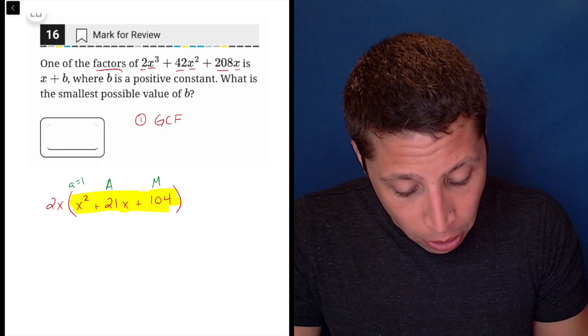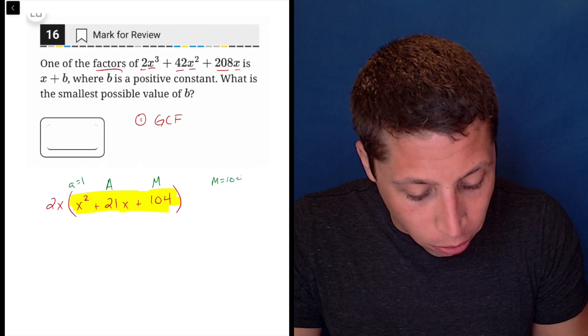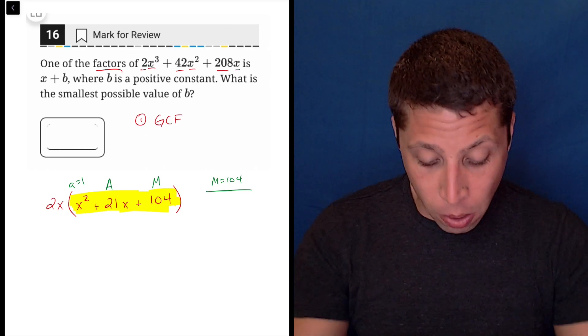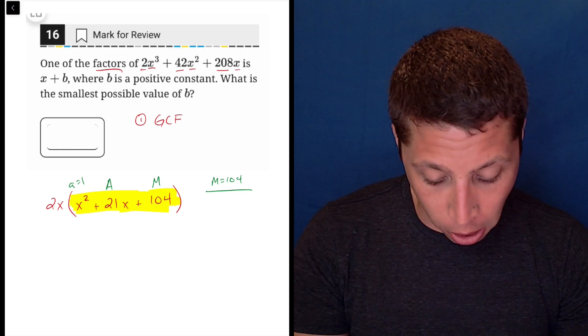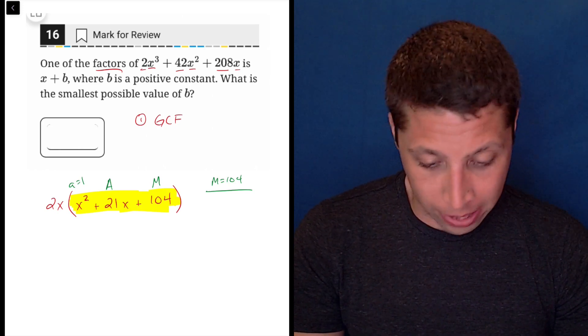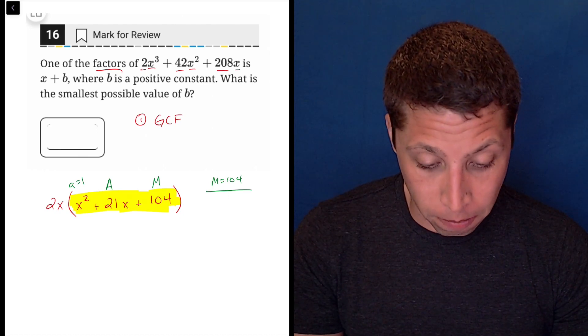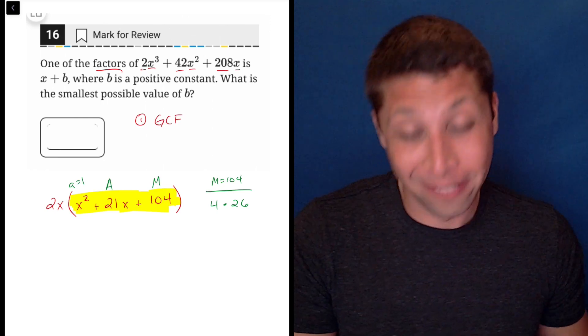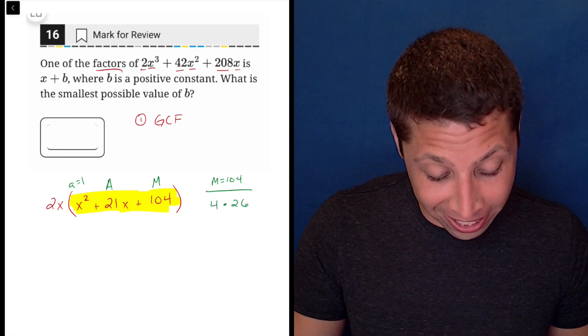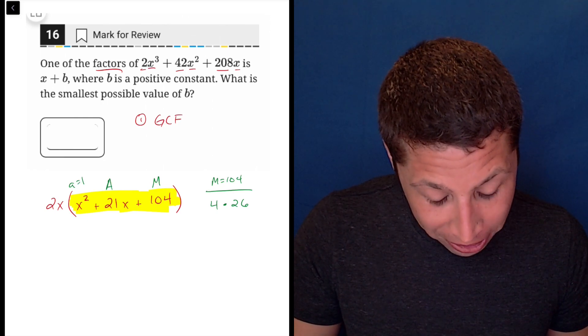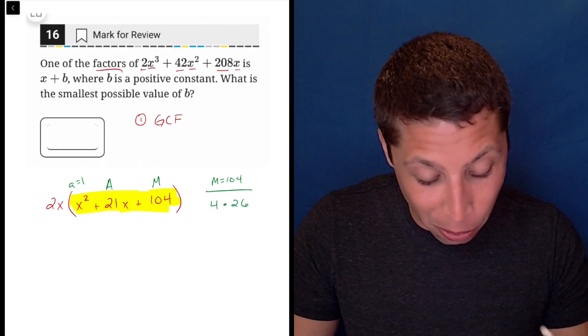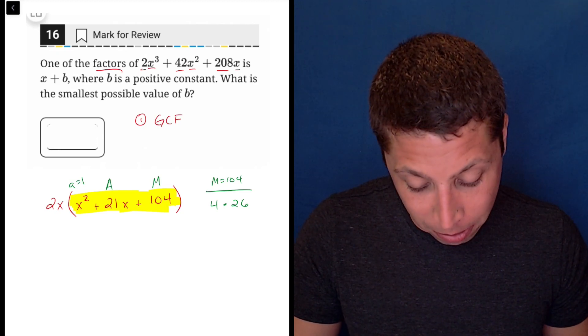I don't know off the top of my head what multiplies to 104, but I have a calculator so I can guess and check. I know they're going to be 21 apart, so let's try 4. 104 divided by 4 is 26. They look pretty close. The problem is that they're both positive, so it's going to cause a problem.